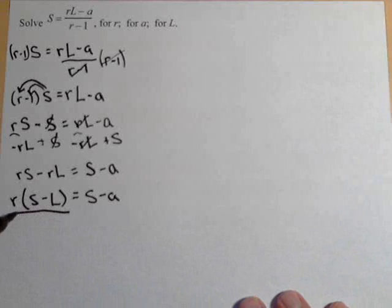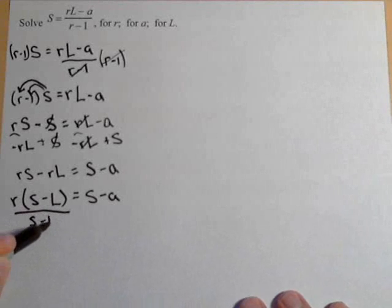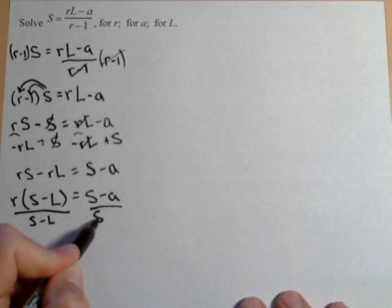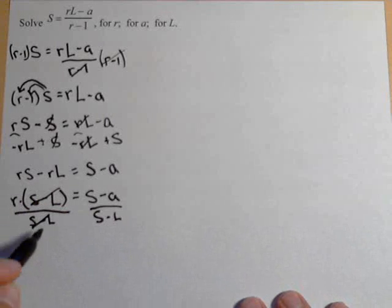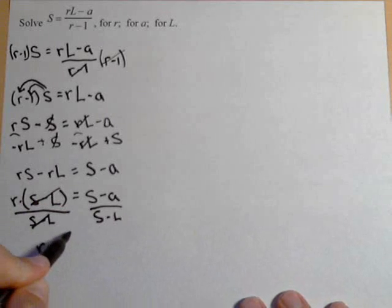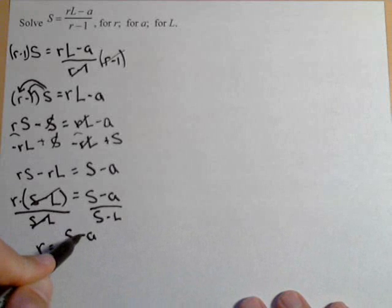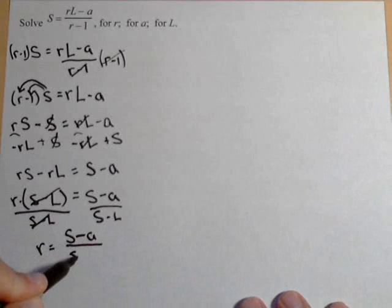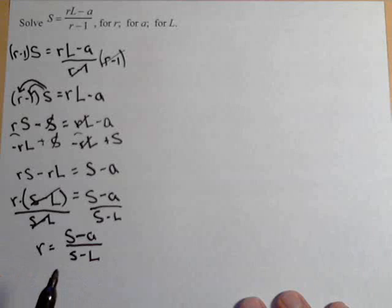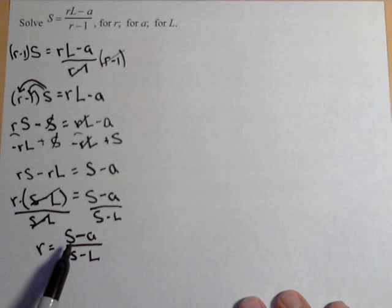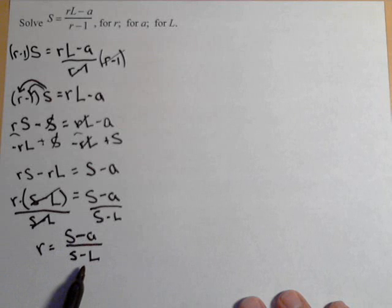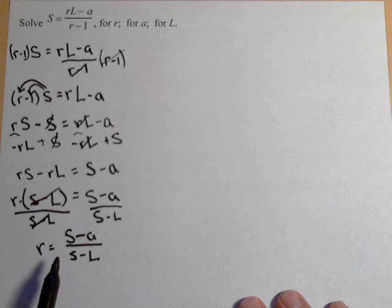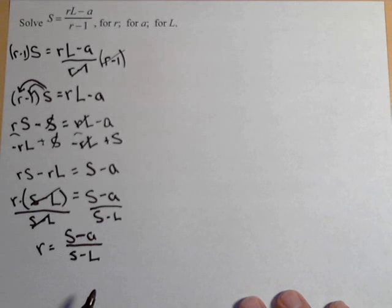Equals S minus A, we're almost done. Last step, divide by S minus L on both sides. Those do cancel because we have a product. So R equals S minus A over S minus L. You may be tempted to cancel out these S's. Do not do it. We do not have a product on top and bottom. We have subtraction. So we cannot cancel out those S's. That's solving for R.